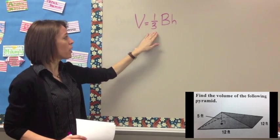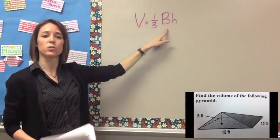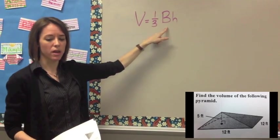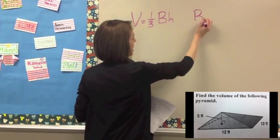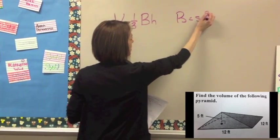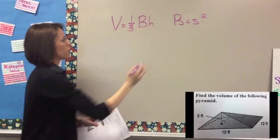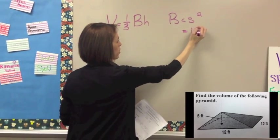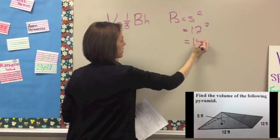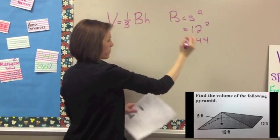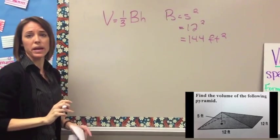Whenever we do these, we always want to pull apart the formula and find the area of the base first. Ask yourself: what is my base shape? For this pyramid, the base shape is a square. To find the area of the square base, you do side squared. In this example, the side is 12, so 12 squared gives you 144 feet squared — that is the area of the base.